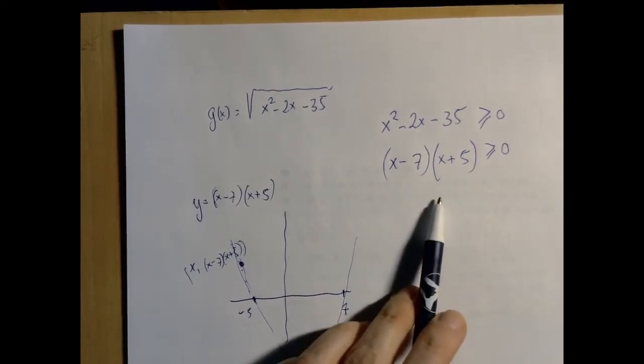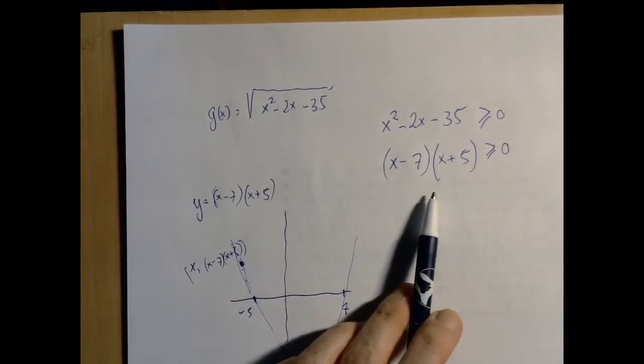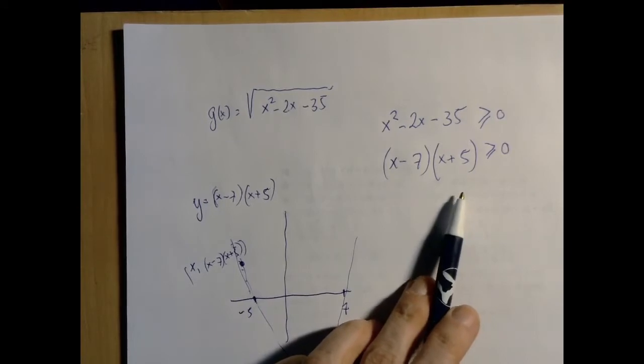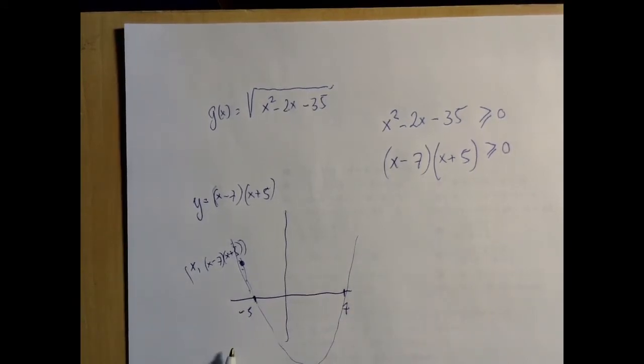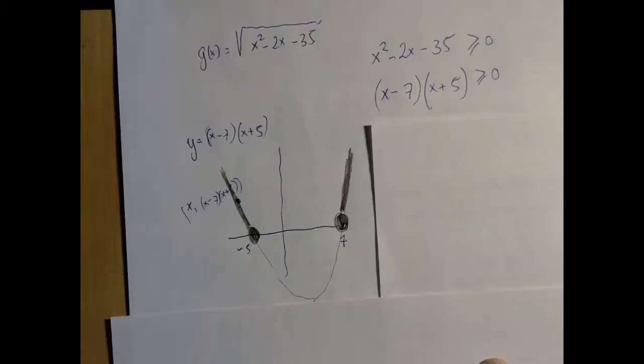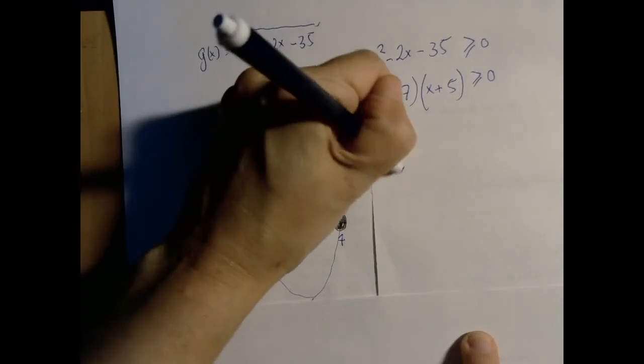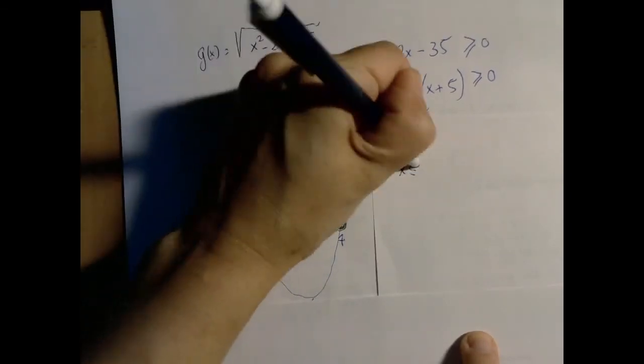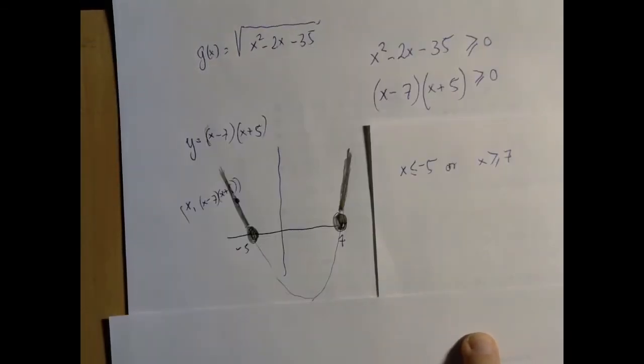if you look here, the question for what values of x will this be non-negative is the same as to ask for what values of x will the points on the parabola be above or on the x-axis. And that set is x is either less than or equal to negative 5 or x is greater than or equal to 7.